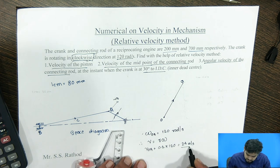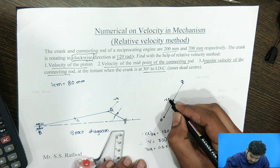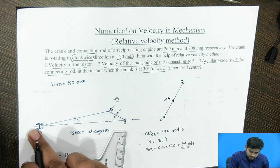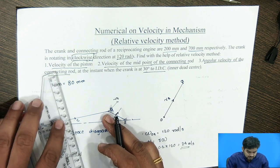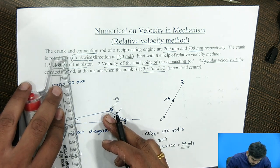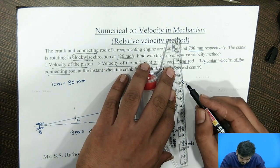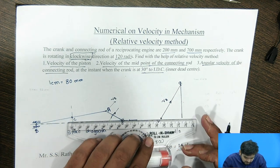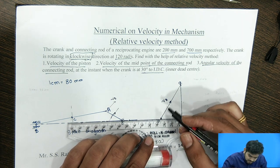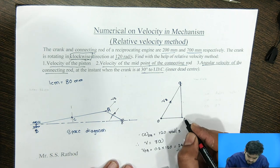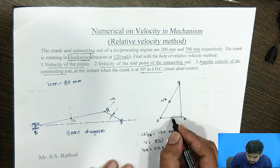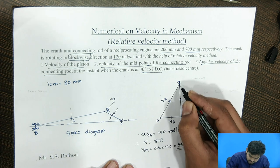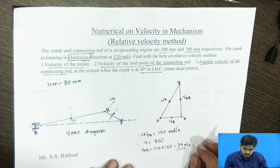By taking a suitable scale, we have to draw the magnitude of OA, which gives the velocity of A in magnitude and direction. Next, for link AB, the velocity of any link is perpendicular to that link, so from the A point draw the perpendicular line to link AB. B is the slider, and the slider always moves in the same direction, so we draw a line parallel to the slider motion. We are getting the intersecting point B. Measuring this length gives the velocity of B, and measuring the other length gives the velocity of A with respect to B.